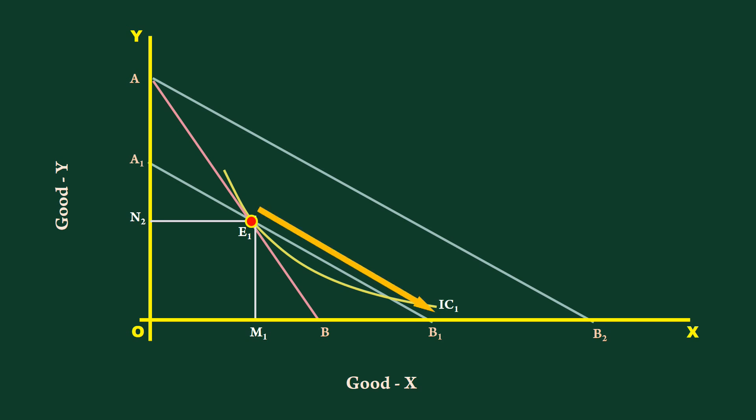His new equilibrium is at E2 where IC2 is tangent to the price line A1B1. He buys M2 units of good X and N1 units of good Y.